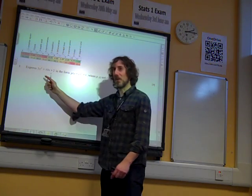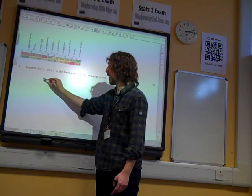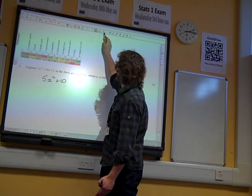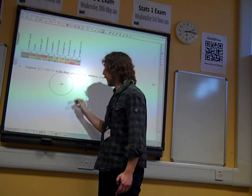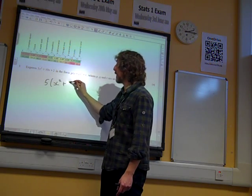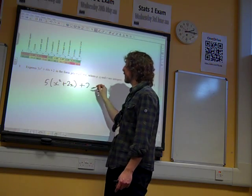Okay, so what do we do? As we were saying—I didn't want to write that. Right, we'd do this, wouldn't we? We'd take 5 out as a factor: x squared plus 2x plus 2.